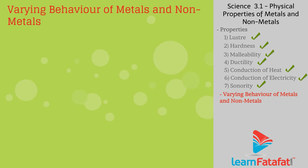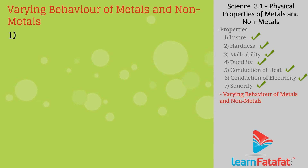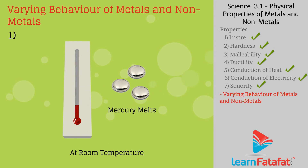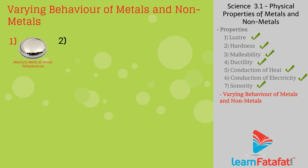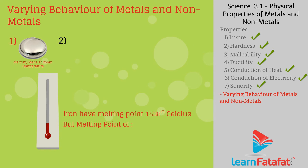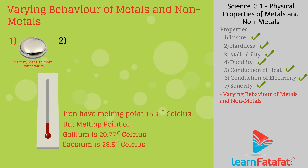Varying behavior of some metals and non-metals. First, at room temperature all metals are solid except mercury. Second, metals have high melting points, but gallium and cesium are metals which melt at very low temperatures.